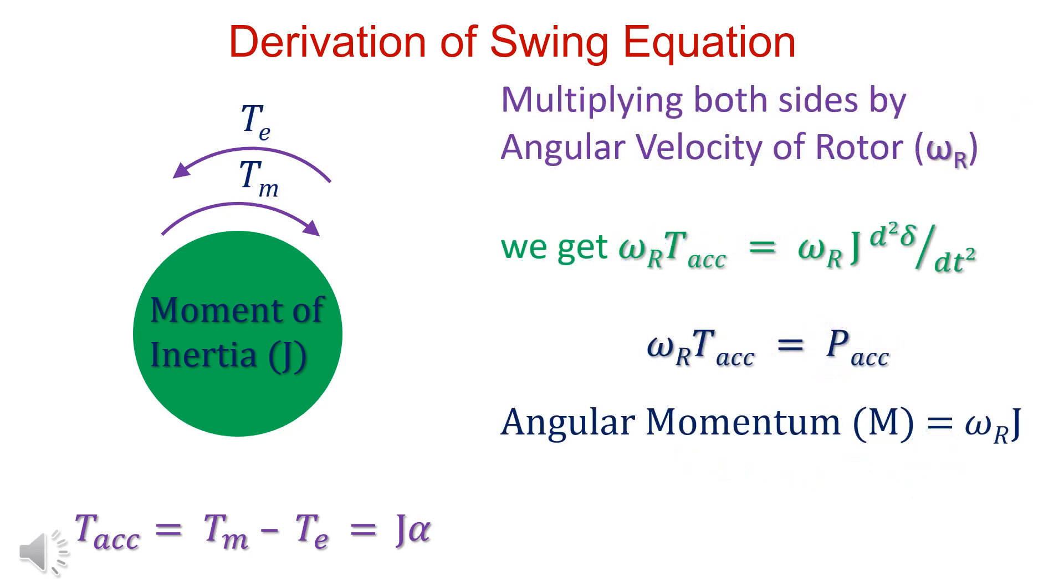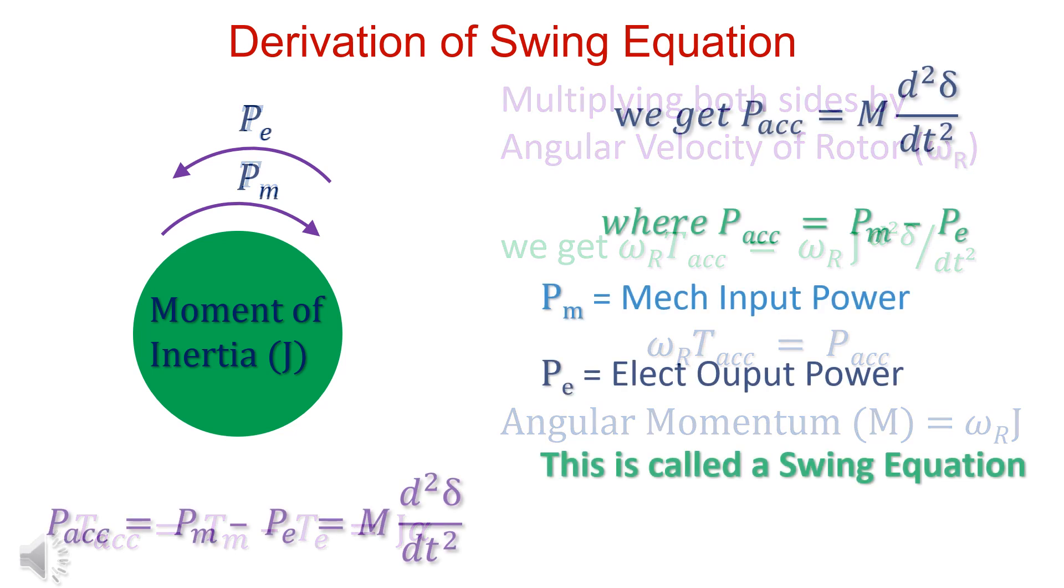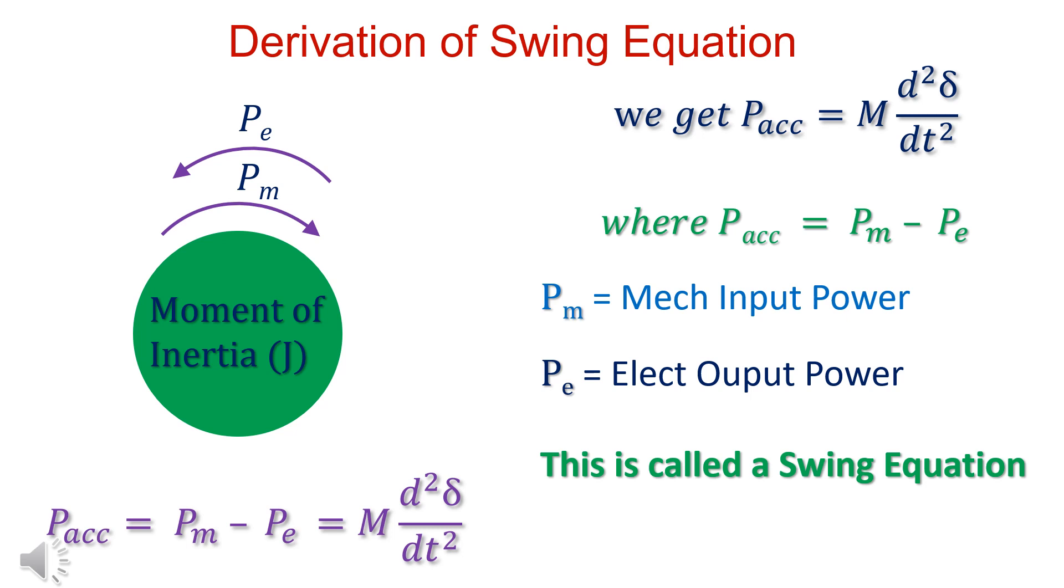Multiplying both sides by omega r and substituting omega r times t ac with p acceleration and omega r times j with m, we get accelerating power equals m d square delta by dt square, where accelerating power equals mechanical input power minus electrical output power. This is called swing equation.